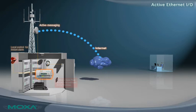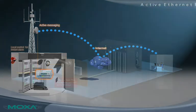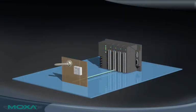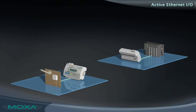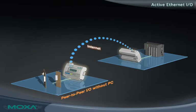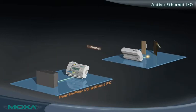Since the I.O. server handles the monitoring of attached sensors, it can transmit a message instantly when user-specified conditions are met. With peer-to-peer I.O. communication, signals are easily transmitted between I.O. devices over Ethernet. Both digital and analog signals can be transmitted between I.O. servers without a PC or master PLC.